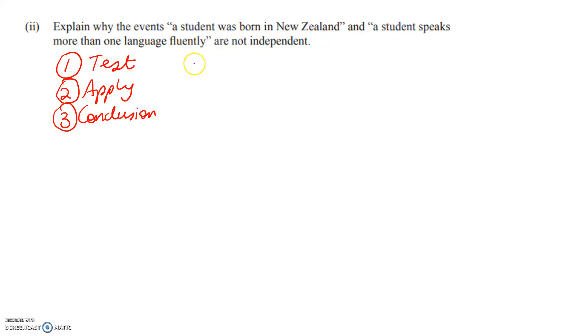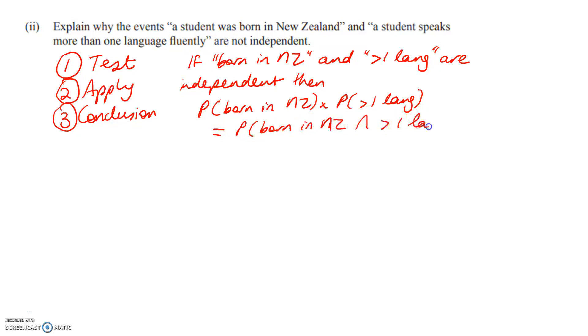You know the test for independence because we've done that over and over. If born in New Zealand and speaks more than one language are independent, then probability of born in NZ times the probability of more than one language should equal the probability of born in NZ and more than one language. If you set this out really well, you show that you actually know what you're doing. So that's step one. That's my test.